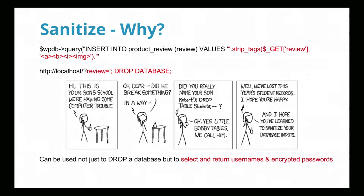Next is sanitizing data. This is the classic xkcd comic about how, if you don't sanitize your data, your database gets dropped because someone's name is 'Robert DROP TABLE students'. So if you use strip_tags to remove bad stuff but someone puts in a review equal to an apostrophe, semicolon DROP DATABASE, that is probably going to be run — and that's a bummer when you lose your database.